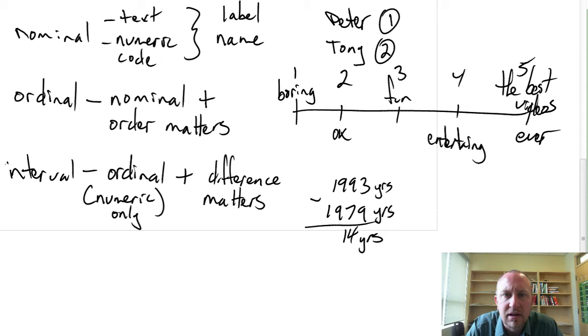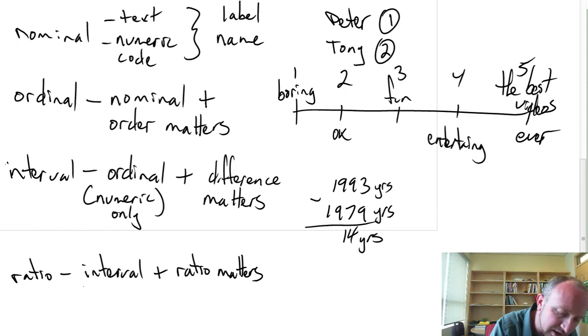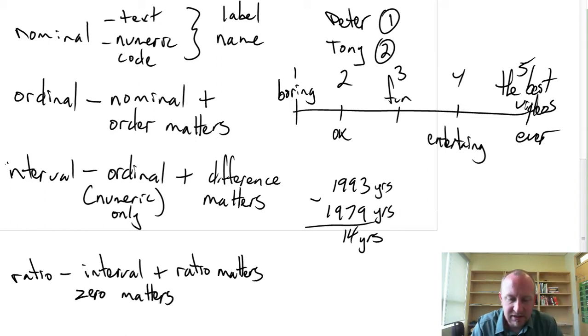Okay, so that gives us everything for an interval variable. The next level, and the last type of variable, is the ratio variable. As you might suspect at this point, this contains all of the characteristics of an interval variable, plus, now actually, there's two differentiating characteristics. One is that the ratio matters. So one value divided by another value has some specific interpretation. And another important characteristic is that the zero matters.